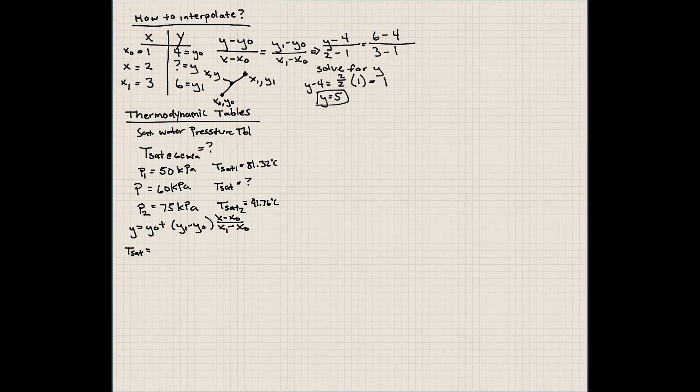y₀ would be the saturation temperature at 50 kPa, so that's 81.32, plus the difference between y₁ and y₀, so y₁ is 91.76 degrees Celsius minus 81.32. That's multiplied by x, which we want to find at 60 kilopascals, minus x₀, which is 50 kilopascals, divided by x₁, which in our case is 75 kilopascals, minus x₀, which is 50.